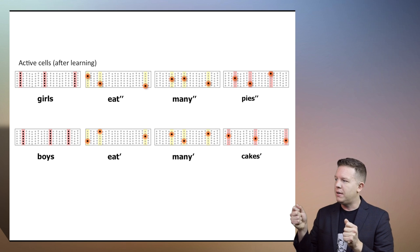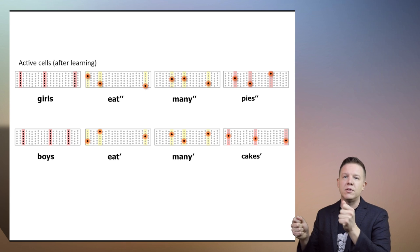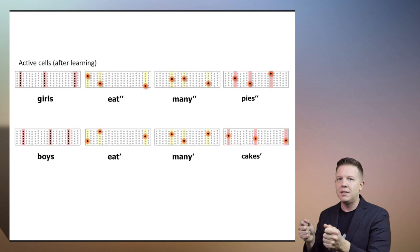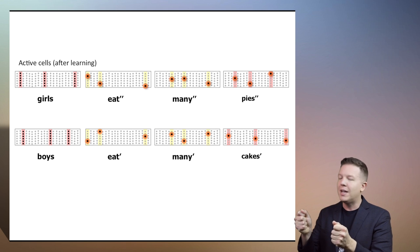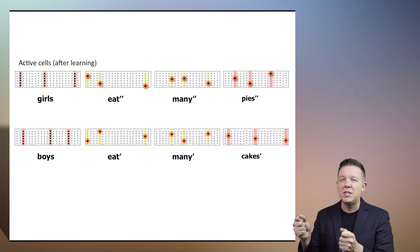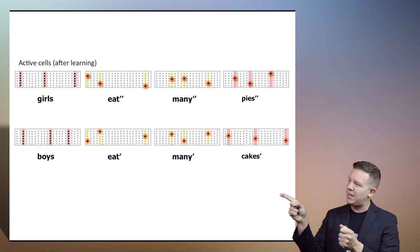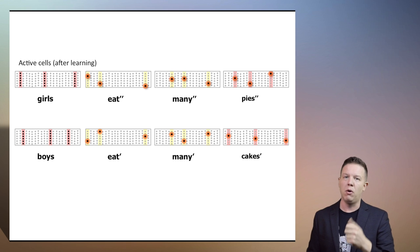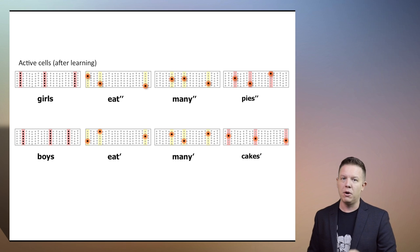So we can identify one eat versus another eat knowing that we're within a specific context. If we got one of these activations, we would know — girls eat. The other we would know — boys eat.